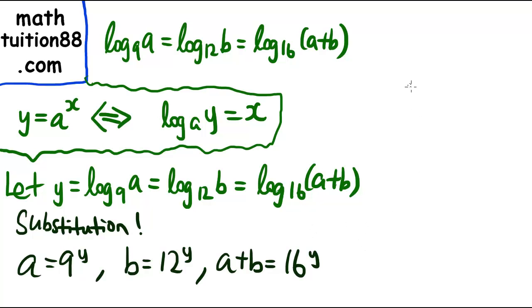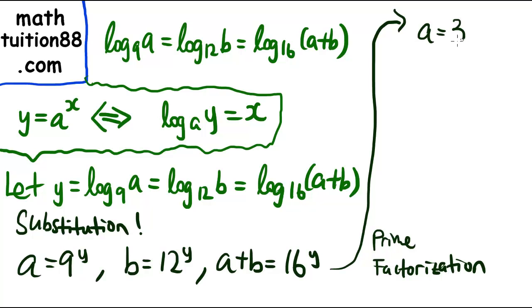So then we will actually use another technique called prime factorization, which is useful for those questions which have whole numbers. So a will be 3²ʸ, because 3² is 9. b is actually 3ʸ times 4ʸ, which is 3ʸ times 2²ʸ. And a+b is 2⁴ʸ, since 16 is 2⁴.